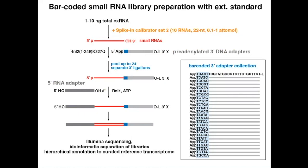The way we prepare our library, we have inputs in the low nanogram range from half of the half-milliliter serum or plasma sample. We spike a few attomoles of calibrator sets into it. Then in a well of a microtiter plate, you join a barcoded 3' adapter to one of your samples — the very first step is an adapter barcode ligation step. You can then pool these 24 barcoded samples after the ligation reaction, process them together, join the next adapter, and reverse transcribe the pooled samples. We process and sequence samples in batches of 24.